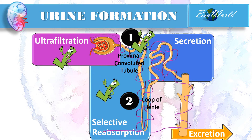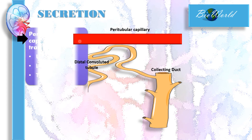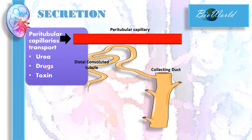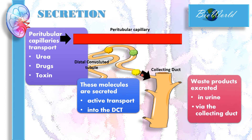We have now completed the explanation for selective reabsorption. Let's move on to secretion. Secretion is the final stage of urine formation. The peritubular capillaries will be transporting waste substances such as urea, drugs, or even toxins. These waste substances will be actively transported into the distal convoluted tubule to dissolve together with the filtrate. The filtrate then flows into the collecting duct, where the waste will be excreted along with the urine.